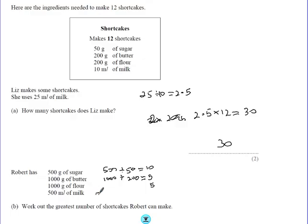And finally, the milk. He's got 500 milliliters of milk. And he needs 10 for this recipe. So he's got absolutely loads of milk and could indeed make 50 lots of these recipes.